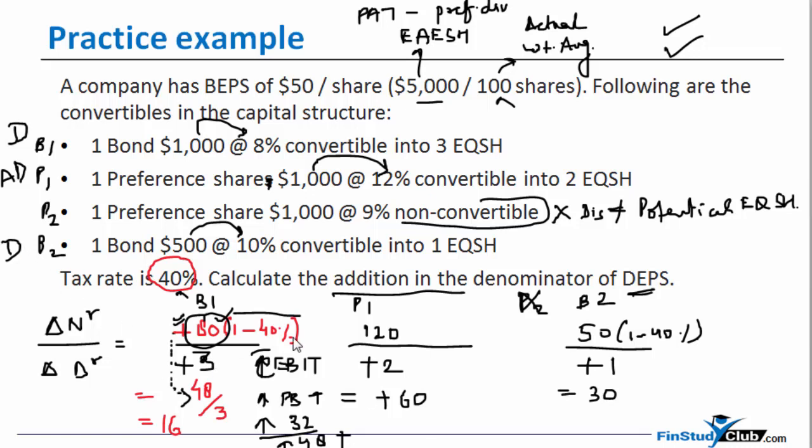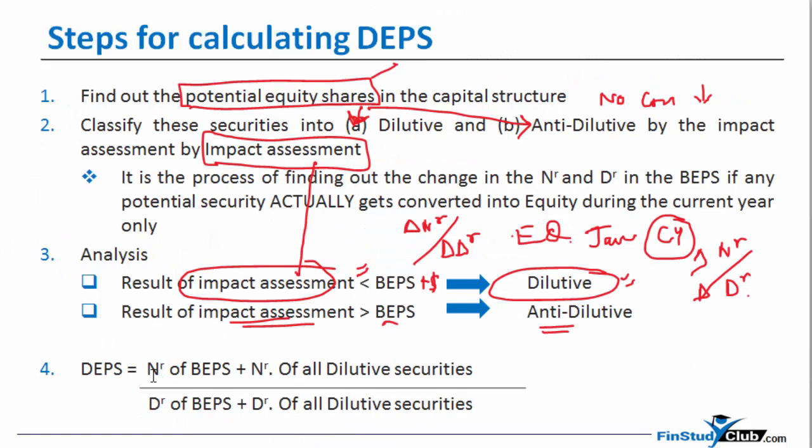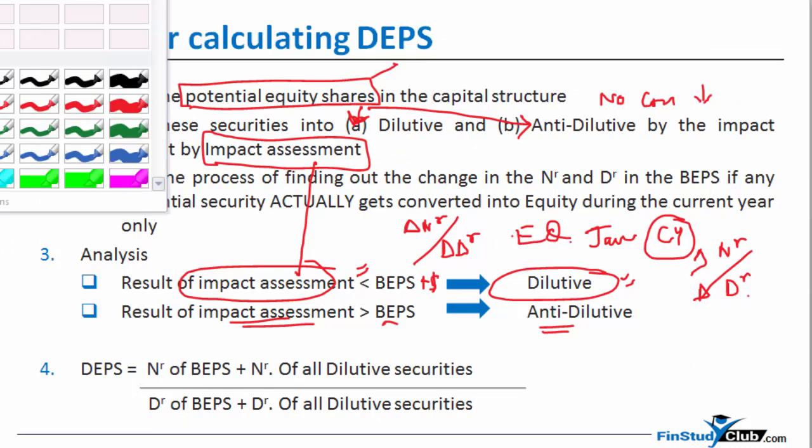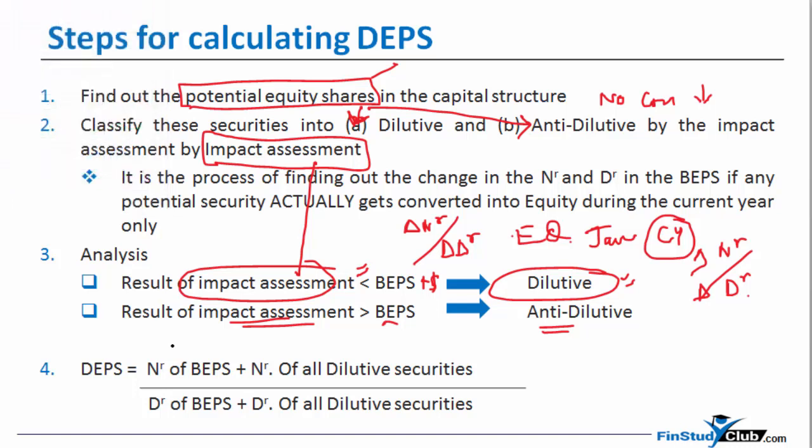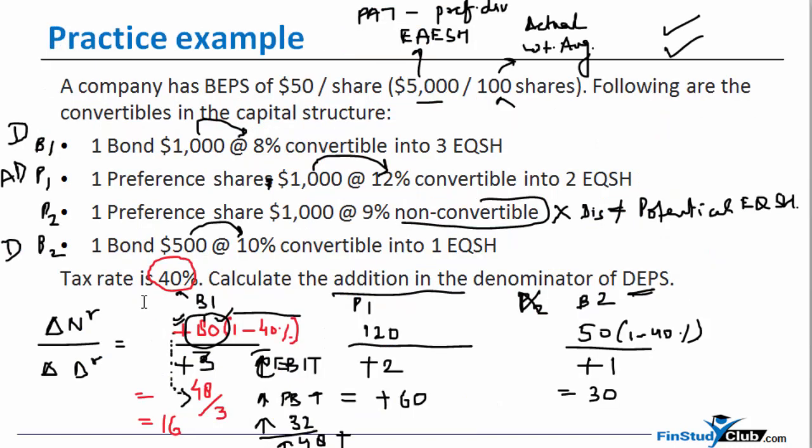Now let's look at the final formula of the diluted EPS. The final calculation reads as the numerator of basic and denominator of basic, and it will have some additions to be done. So the numerator of basic was five thousand one hundred.